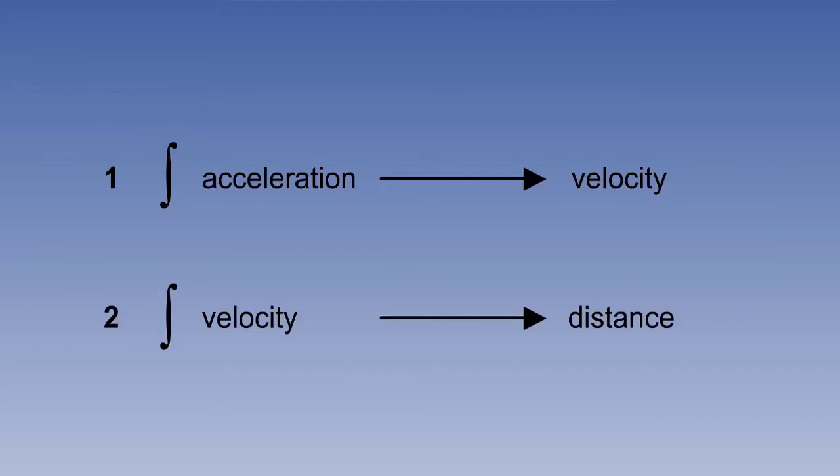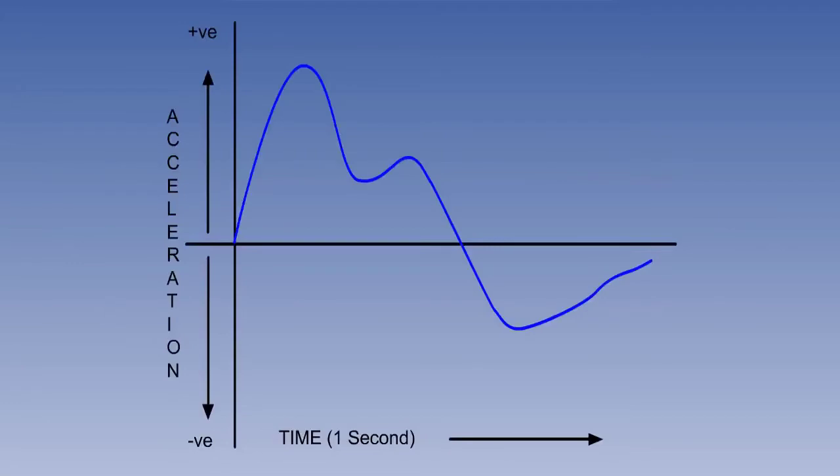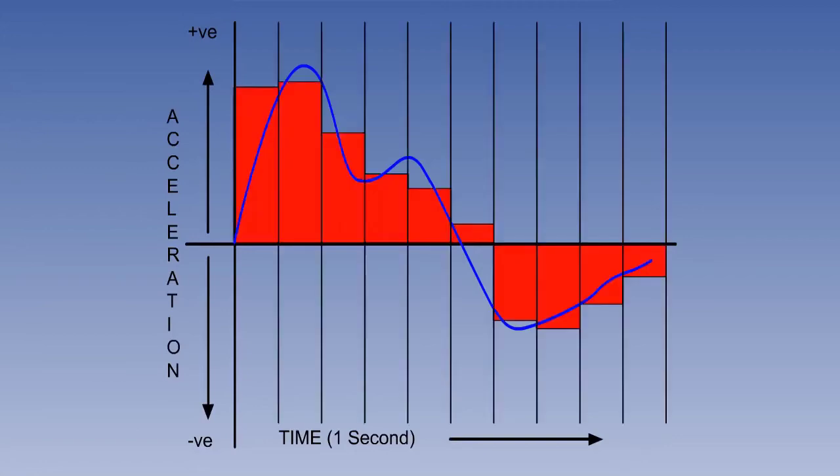Most modern INS integrators use digital computing. Suppose that over a second, the output from the accelerometer is an analog voltage like this. The integrator digital sampler will turn it into this. The input of acceleration, for example, is sampled many times per second, and each instantaneous value is multiplied by the time interval between samples. Adding all of these multiplied values together gives the total increase in speed over one second.